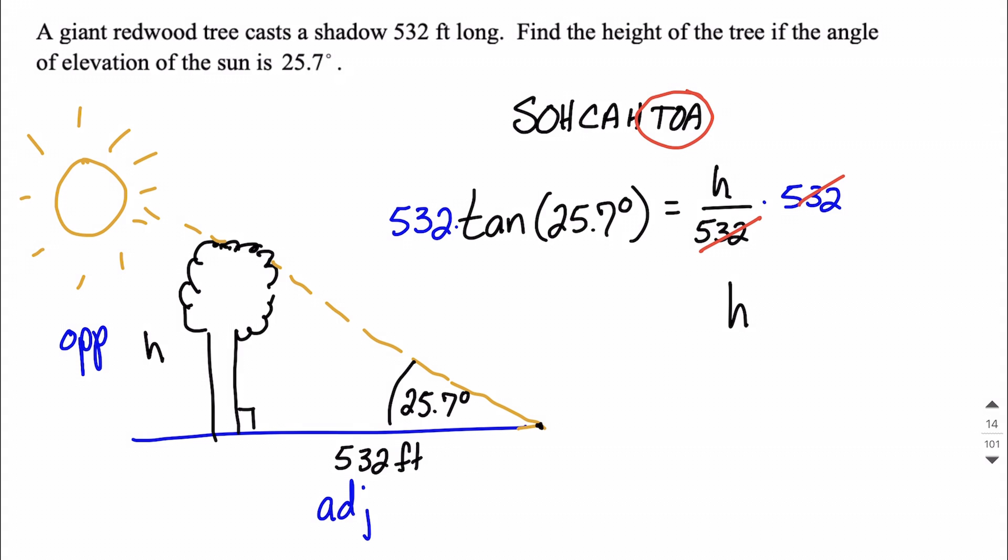From here, let's just go ahead and put this into our calculator. Can't do 25.7 degrees in tangent in our heads. So let's find out. This works out to be approximately 256.03.